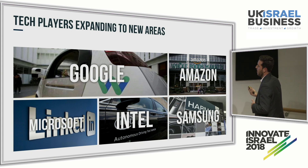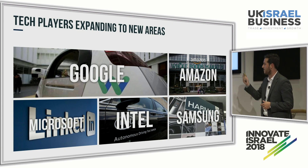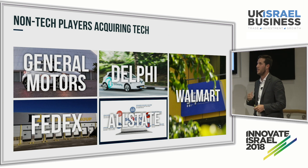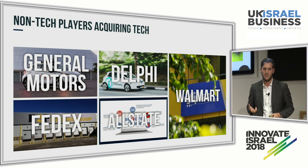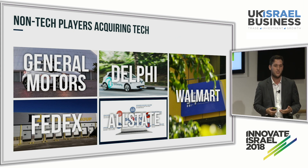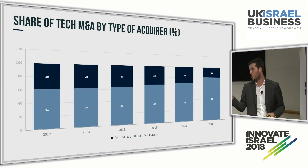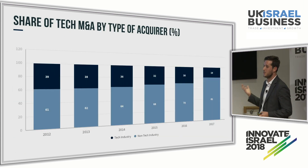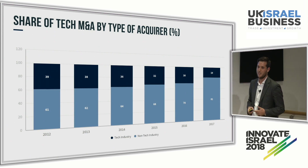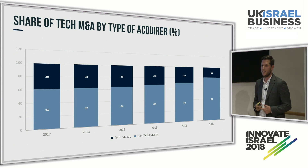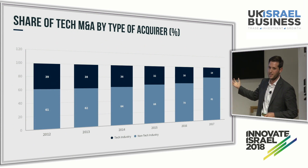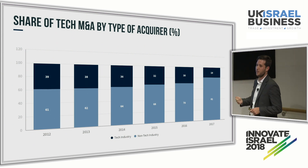We also saw Samsung acquire ARM a few years ago. But we're also seeing it from the other side — non-tech players that are acquiring tech. Today non-tech players understand they may need to acquire tech in order to survive, and they understand that they can't develop it in-house. If we look at who's making most of the tech acquisitions in the world, we're seeing that from 2012 until 2017 there was a huge increase in the proportion of non-tech players doing tech acquisitions, and we think this is going to continue to grow, because these non-tech players — if they're not going to innovate, they're not going to survive.